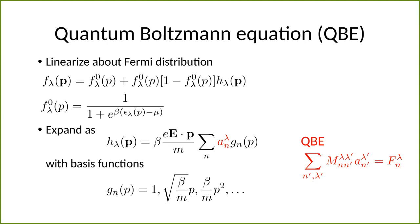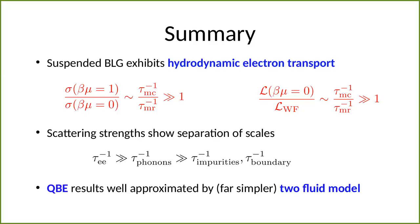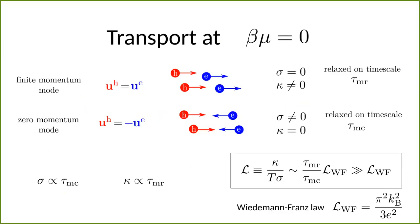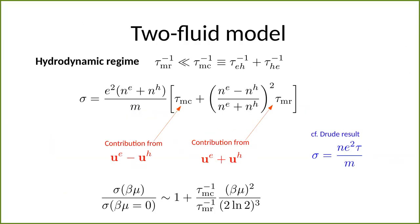A follow-up question about the conductivity formula sigma: is there a further condition needed for the expression to hold as just a sum of two contributions? The answer: yes, deriving that formula requires assuming the momentum-conserving scattering rate is much larger than the momentum-relaxing scattering rate — the formula is only valid in the hydrodynamic regime.